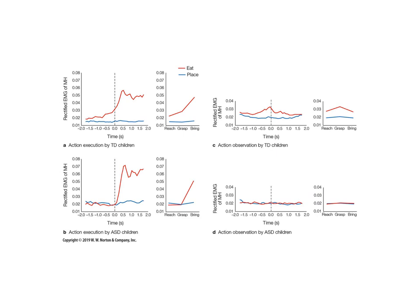Looking at the time course of muscle activities during these reach actions: the red line represents task one and the blue represents task two. In typically developing children, you can see clear differences in muscle activity between the two conditions, especially at the disparities between reach, grasp, and bring-to-mouth phases. Significant disparities are also seen at the reach level — this is what is shown when action is executed by both ASD and typically developing children.